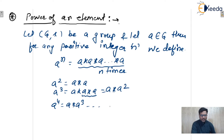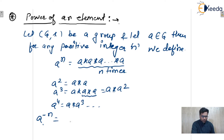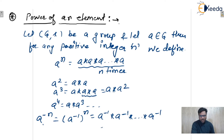Now, what is a raised to power minus n? If the algebraic structure is a group, then we can define negative powers also. Negative powers are defined only for groups. We can write a to the minus n as a-inverse raised to power n, which equals a-inverse star a-inverse star a-inverse — n times.